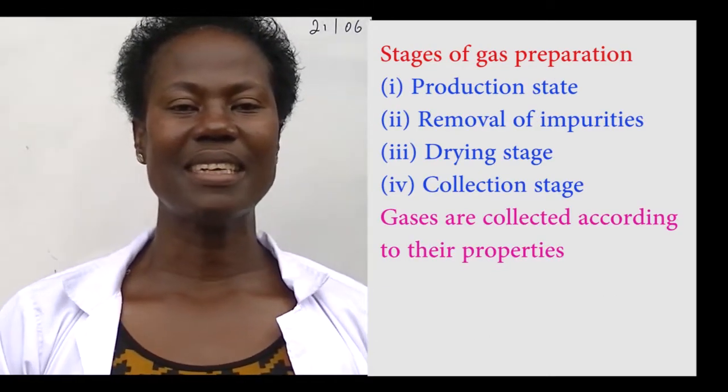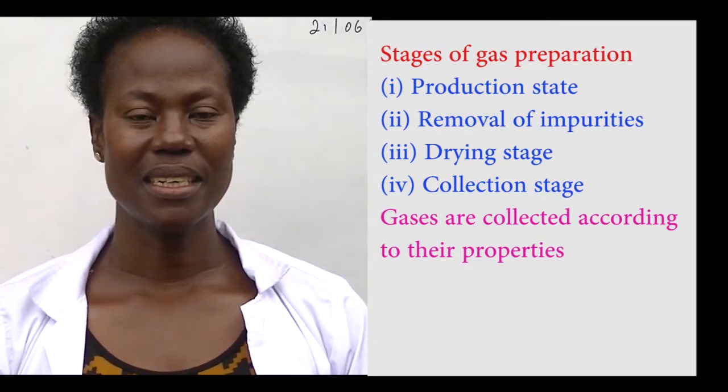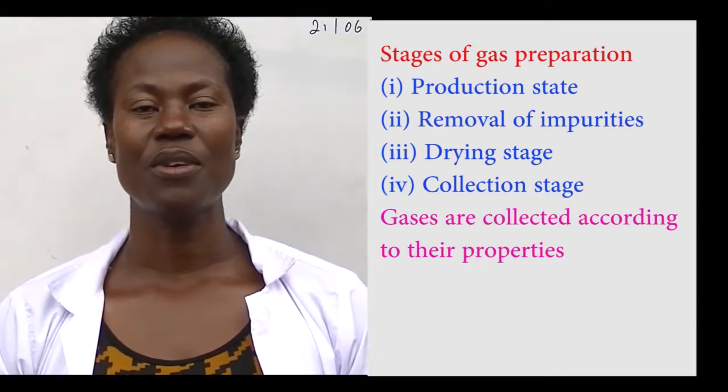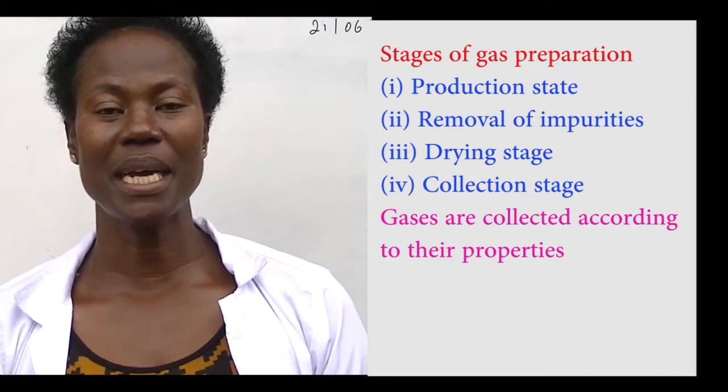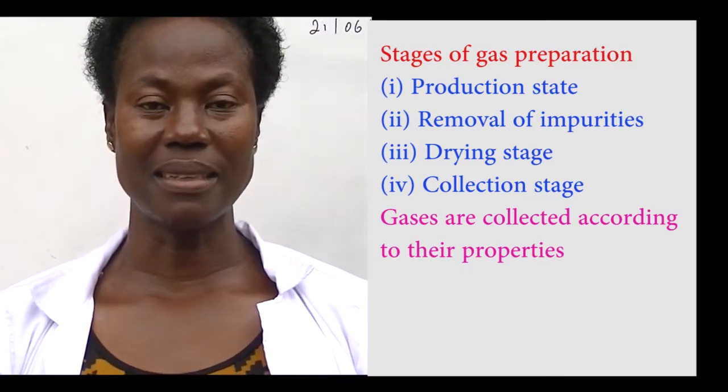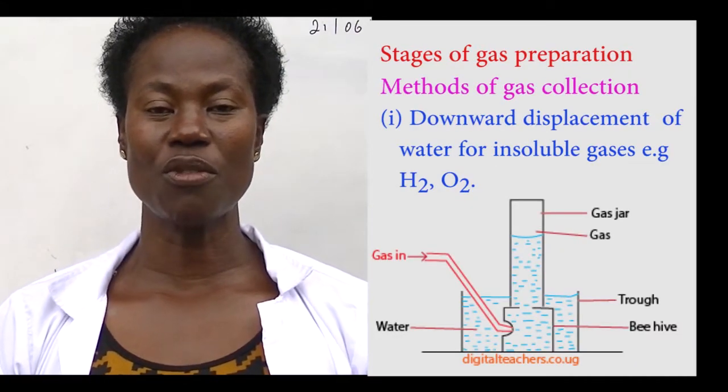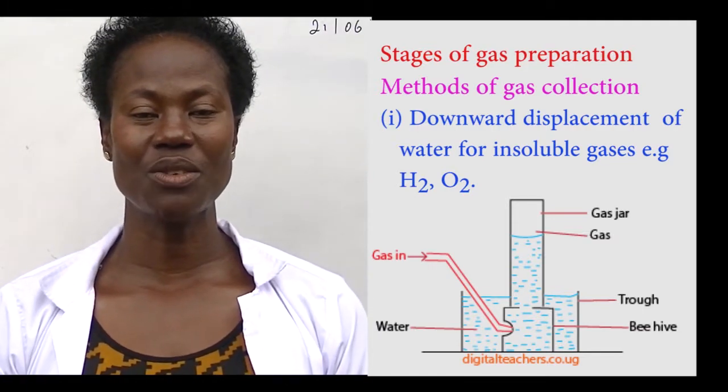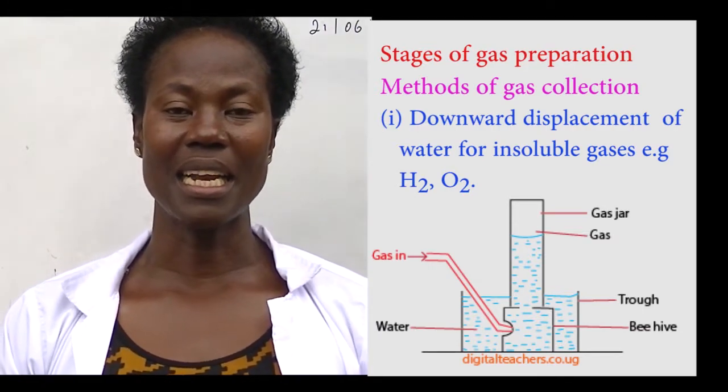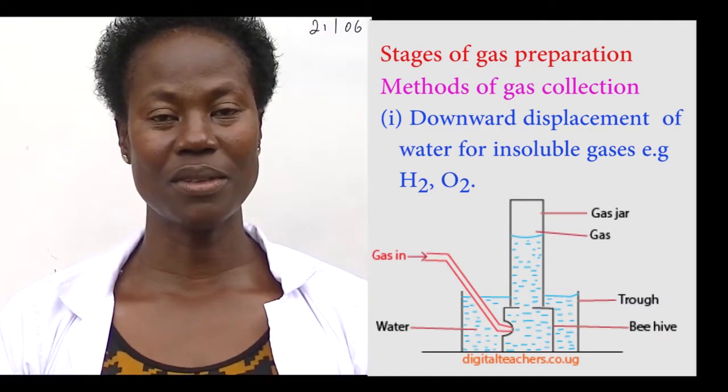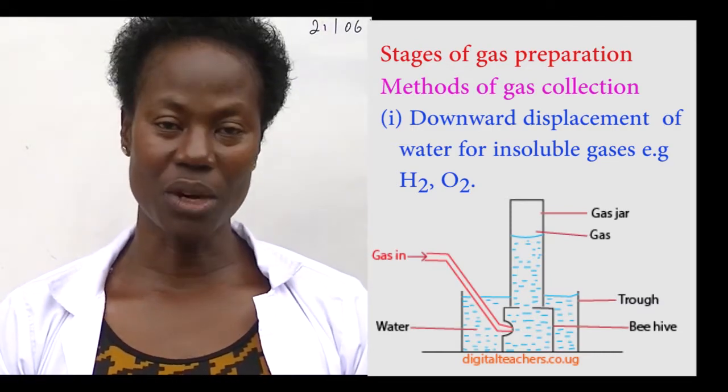The last stage is the collection stage. We have several methods of collecting the gases depending on their properties. Downward displacement of water is mainly used for gases which cannot dissolve in water. An example is hydrogen, oxygen, but not ammonia.